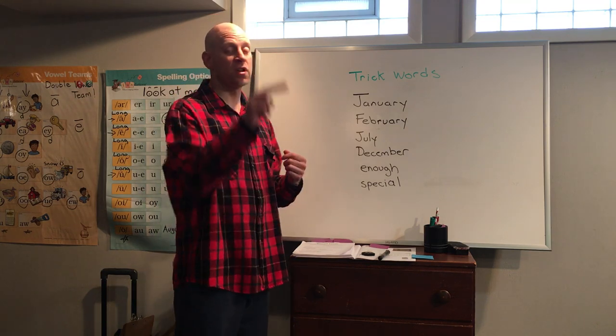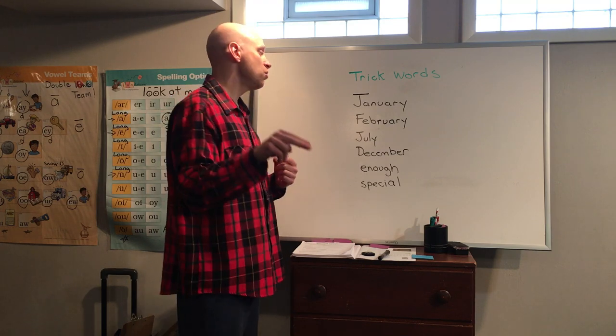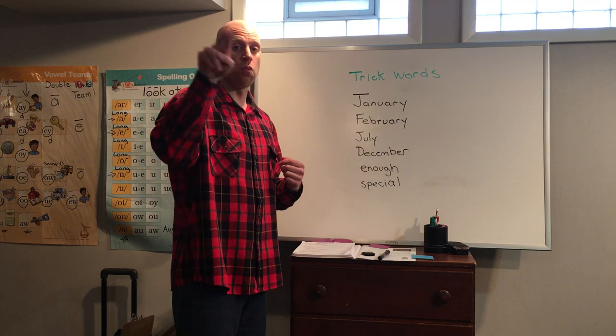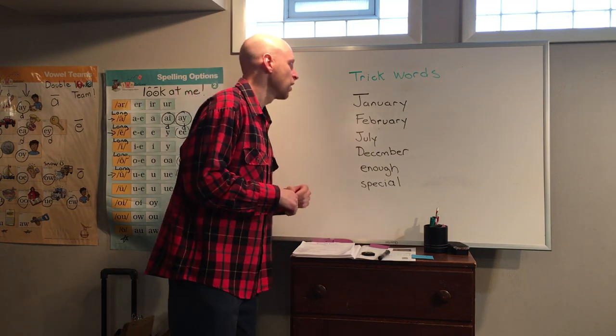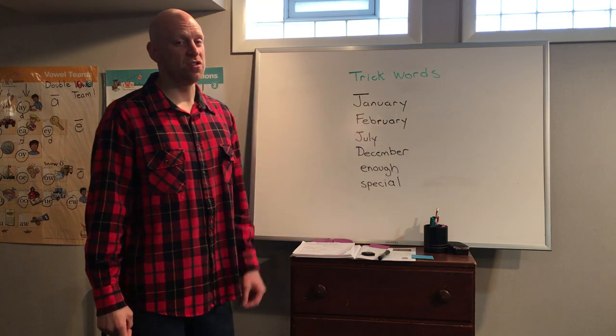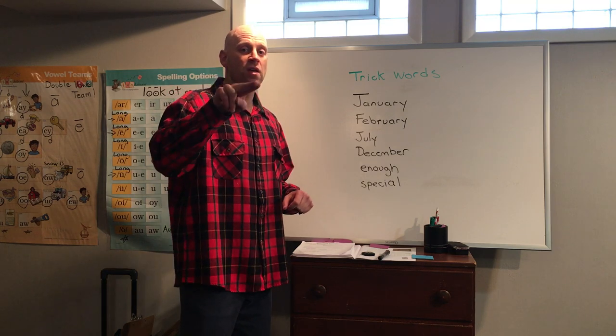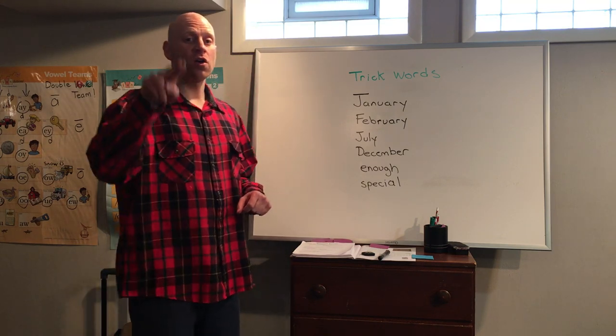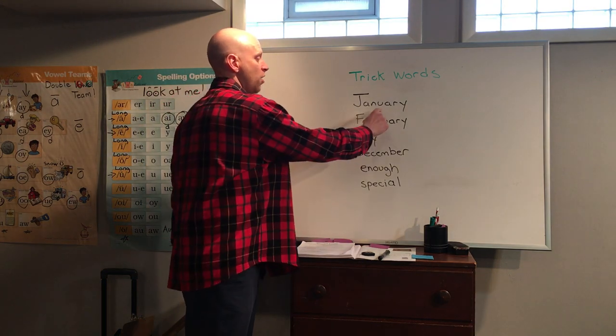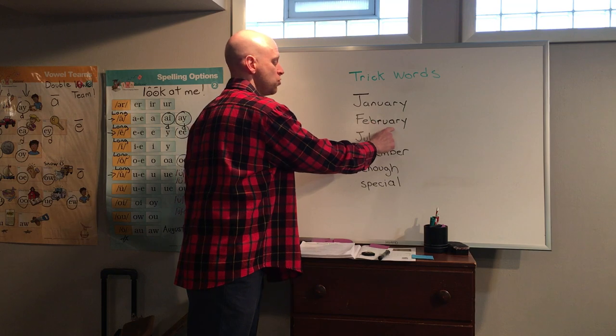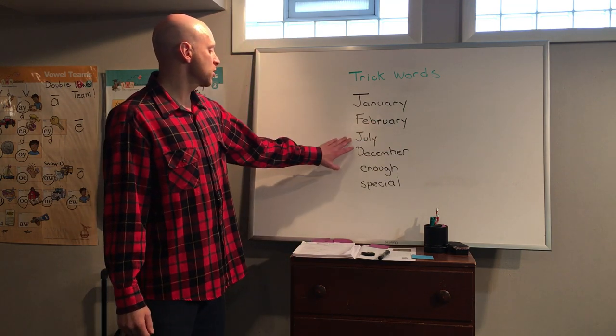We're going to practice four that are months and then two that are just regular words. Now you notice the four of words that are a month are all capitalized because they're the name of a month so we need to capitalize those. So you can write these at home or if you want to do sky writing you can do that. So for the first word, J-A-N-U-A-R-Y. We underline it. January. What's my next word? So this always gets me that R before the U just seems so weird. So F-E-B-R-U-A-R-Y. So we have U-A-R-Y, U-A-R-Y in both of those, both of those months.